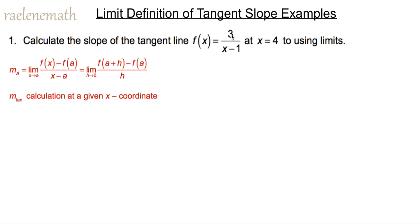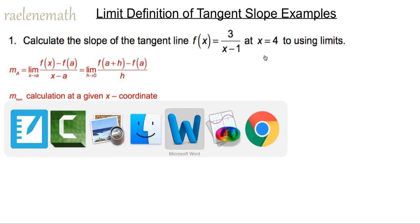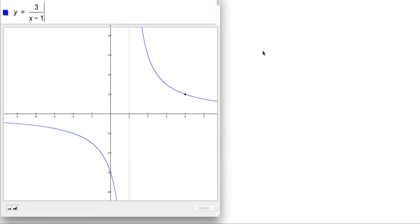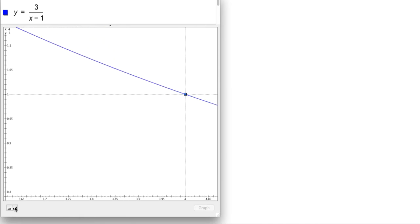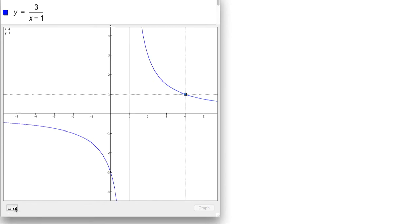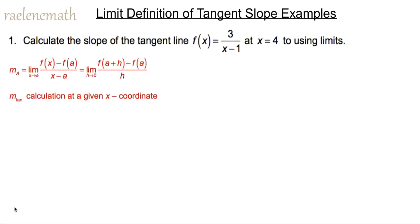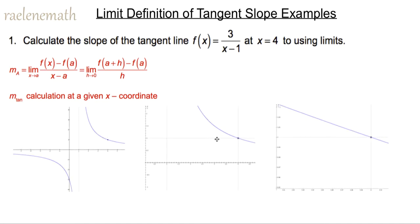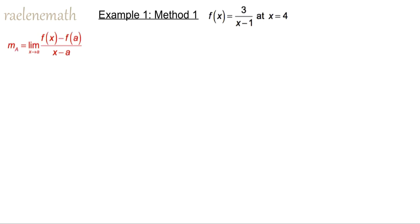Given the function f of x, which is 3 over x minus 1, we first want to see: does that function even have a tangent line when x is equal to 4? We're going to do that by looking at its graph, and we're going to zoom in at the point x equal to 4 and y equal to 1. If we zoom in far enough, we notice that this graph does indeed look like a line, and so that is the tangent line with a single finite, therefore defined slope. Keeping that tangent line in mind, we want to find its slope using the first definition.